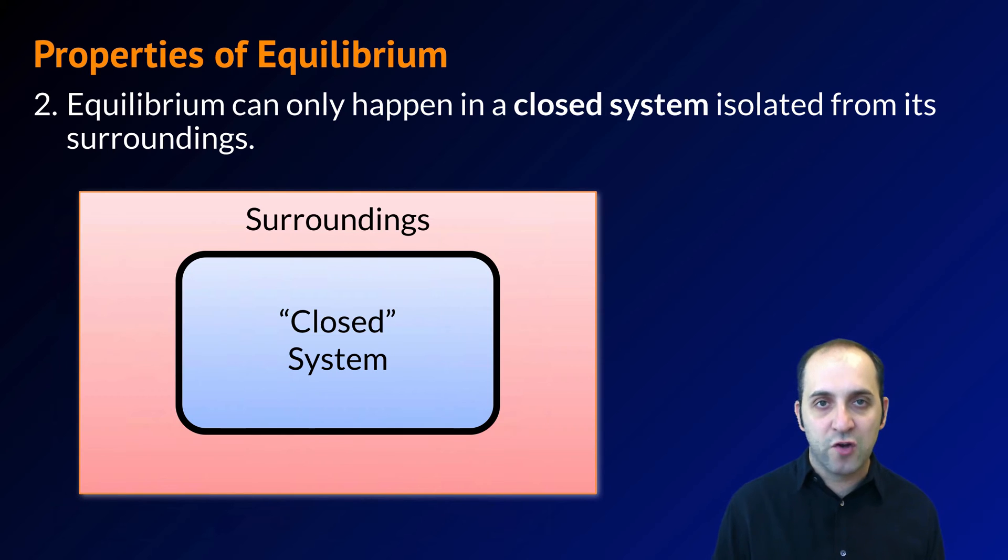Of course, there's no real thing as a perfectly closed system other than the universe itself, but for the purpose of our equilibrium discussions, we mean they're closed to inputs that affect the equilibrium. You can think about this with the jugglers. If somebody all of a sudden started throwing more pins into the juggler system, they would quickly leave equilibrium and probably wind up getting hurt in the process.